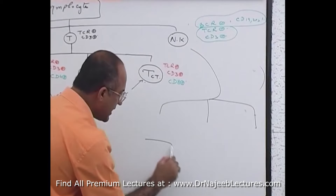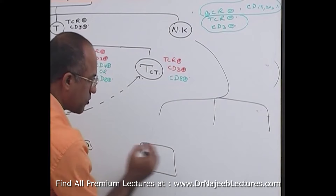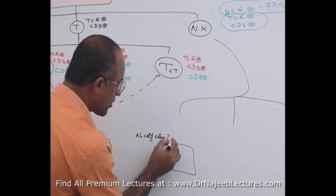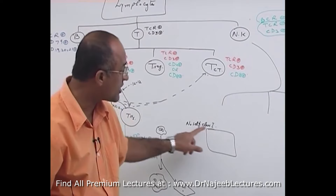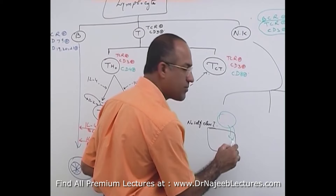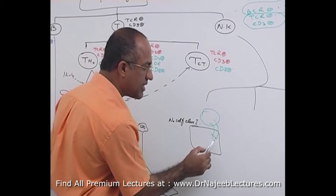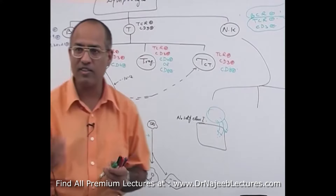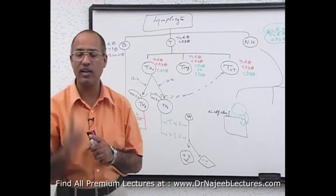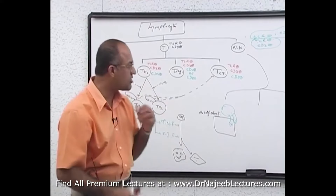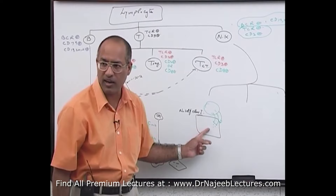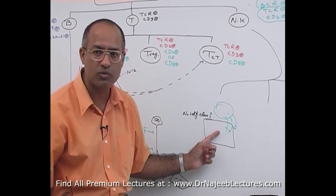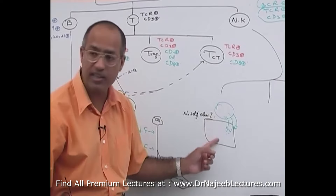Mechanism one: any cell that does not express self class I molecules is killed by natural killer cells. Every nucleated cell in the body is supposed to express its own class I molecules. Cells not expressing class I include those infected by viruses that downregulate the class I gene, and tumor cells that switch off the class I gene.